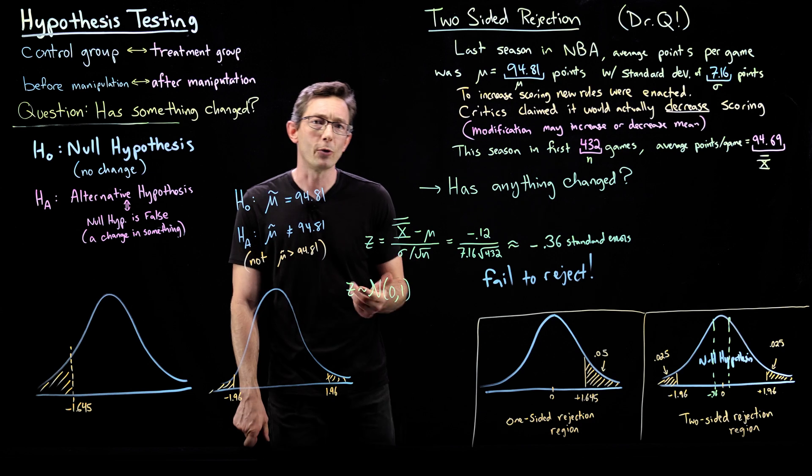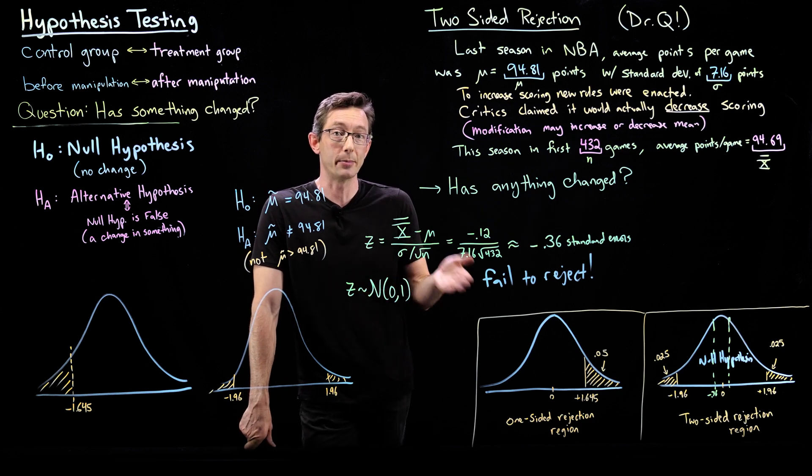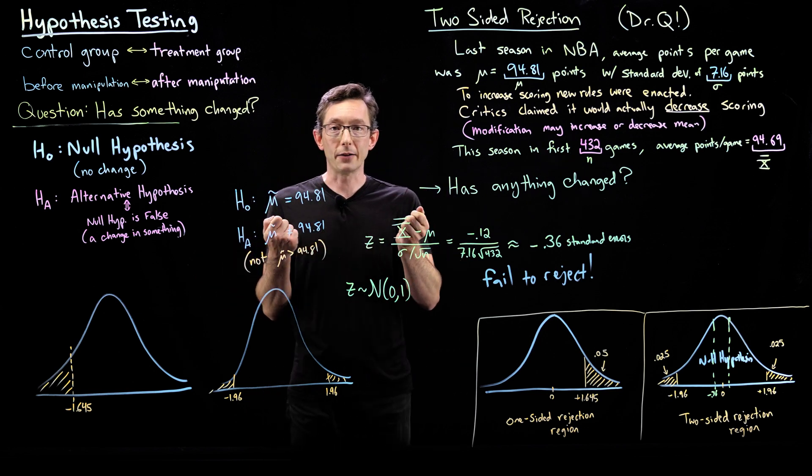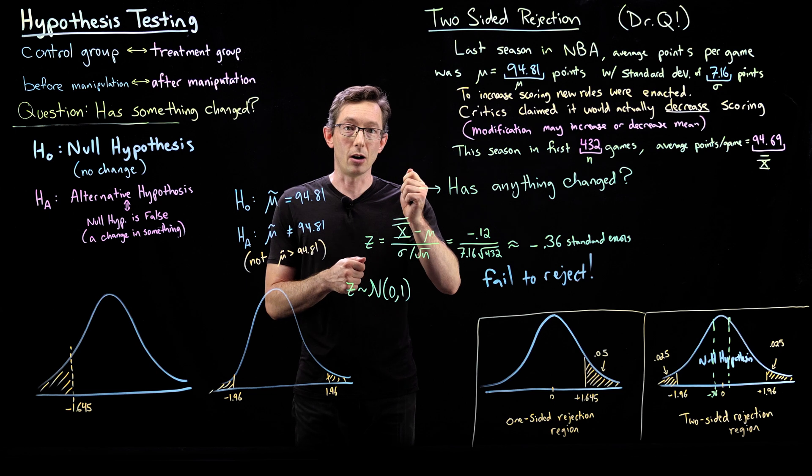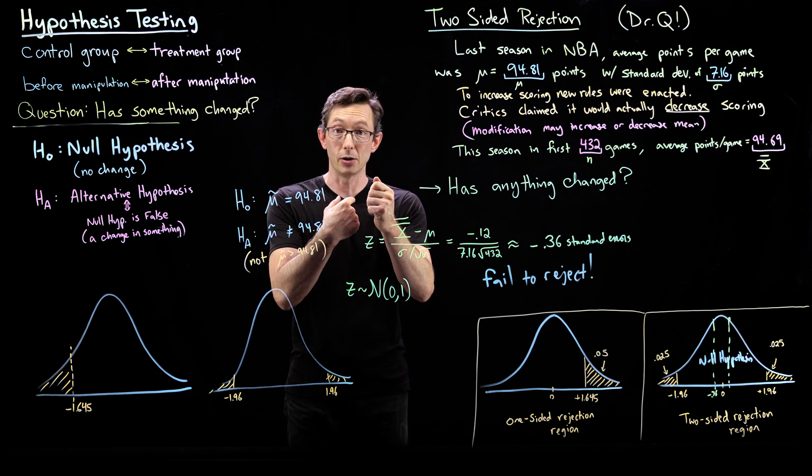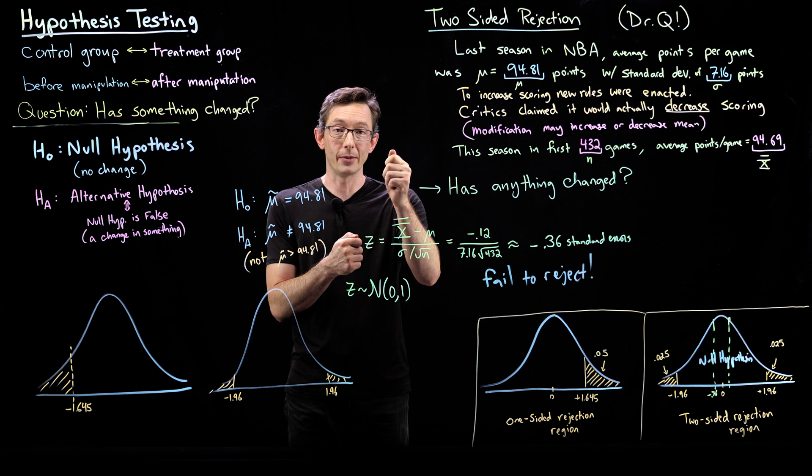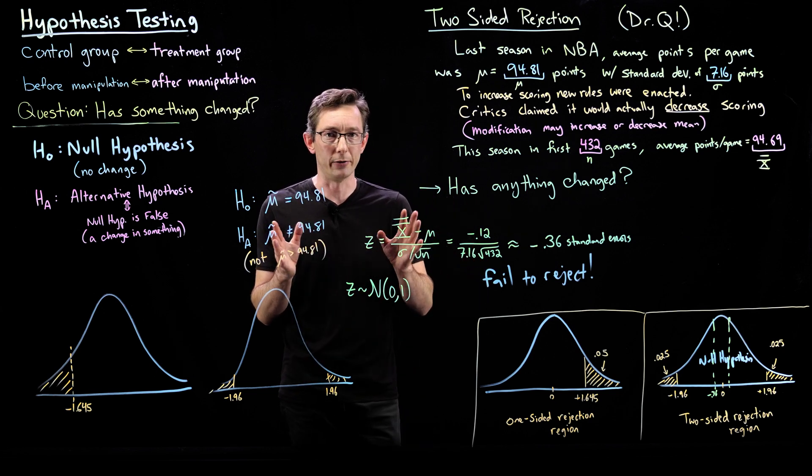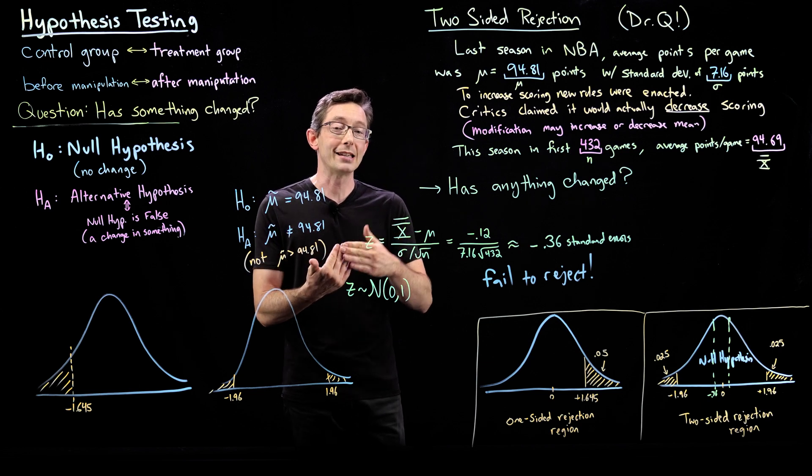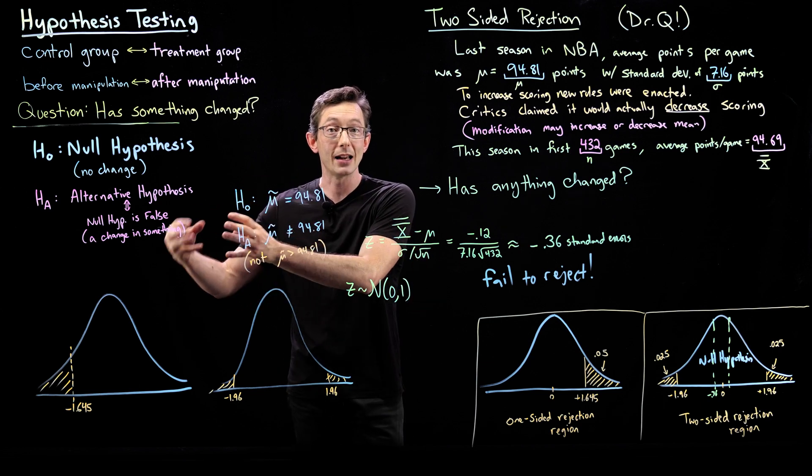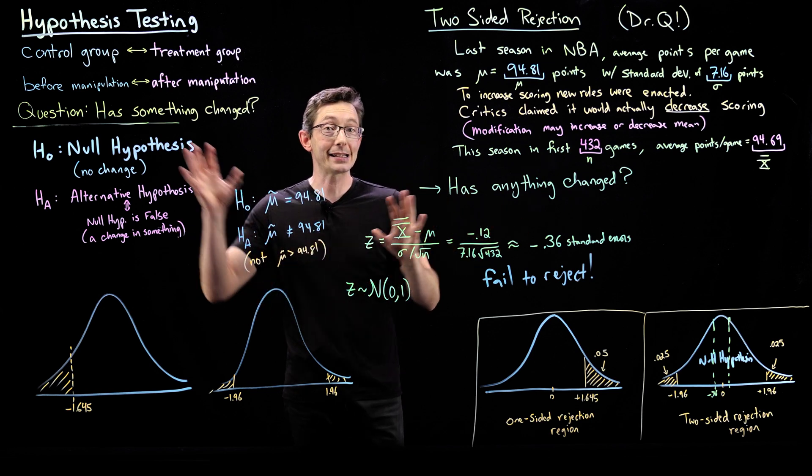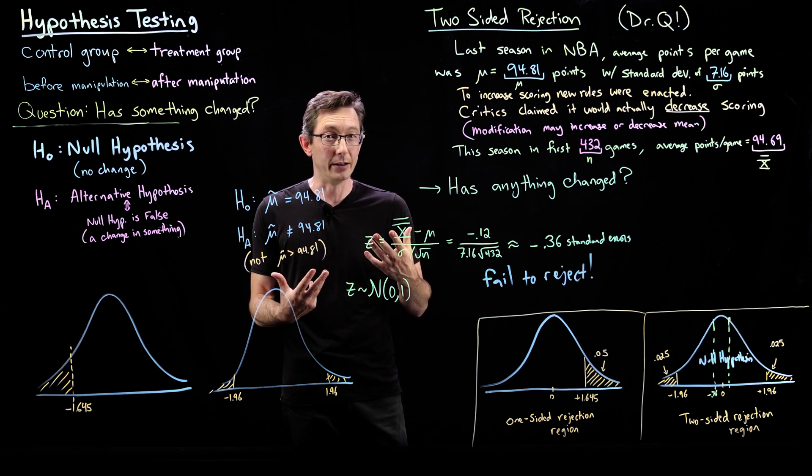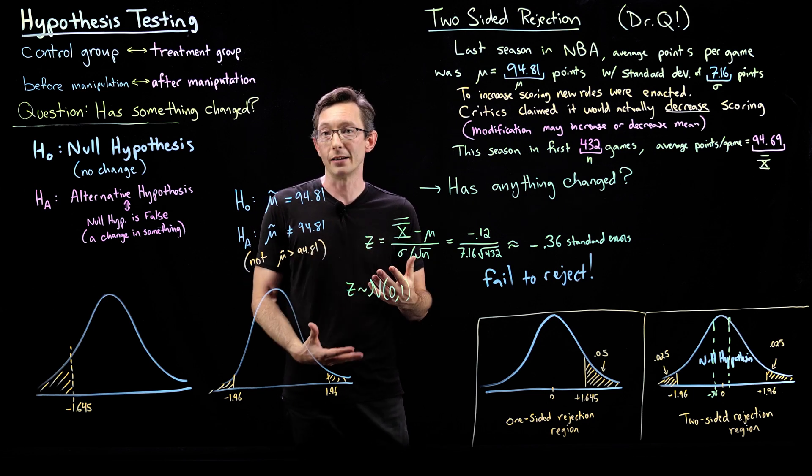There's another cool example from Rice's textbook on ESP, extrasensory perception, where you could do a test. This is actually something you can do with your friends. Get a deck of cards and randomly draw a card. Don't show your friend, but let them guess what the suit is. Then reshuffle, draw another one, have them guess the suit, reshuffle, draw another one, guess the suit. You can do this 50 times, 100 times, whatever. Based on the probability that they would do this at random, you can compute how many times they got the suit correct. You can use that to test the hypothesis of whether or not your friend does or does not have psychic abilities. That might be a fun homework problem or way of testing this yourself.